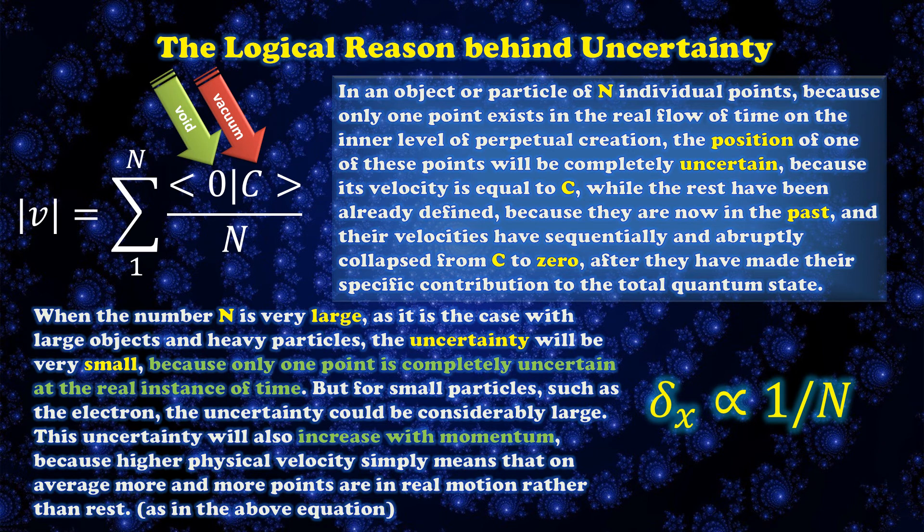This explains all the puzzling features of quantum mechanics, such as uncertainty, the measurement problem of the effect of observers and consciousness, as well as the reality of wave function and its collapse, as it has been demonstrated in more detail in Chapter 6 of the Duality of Time Theory.